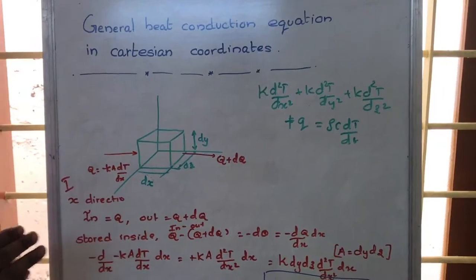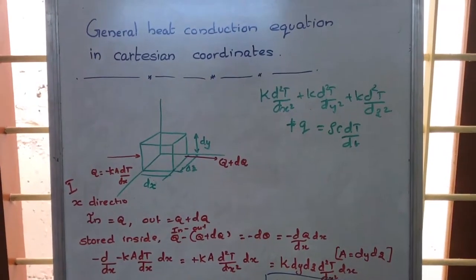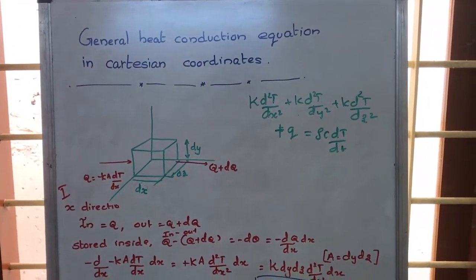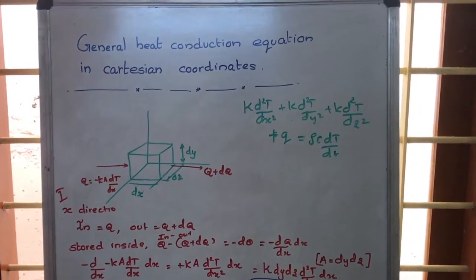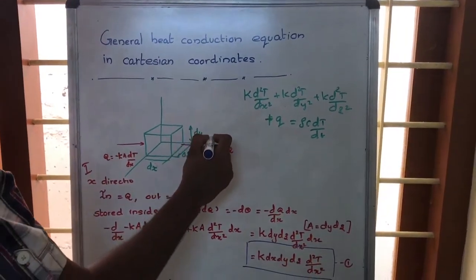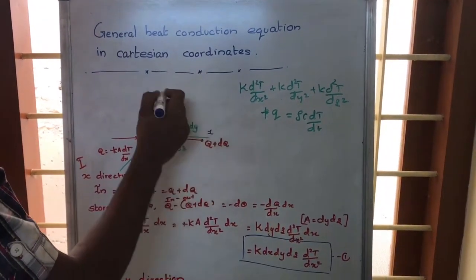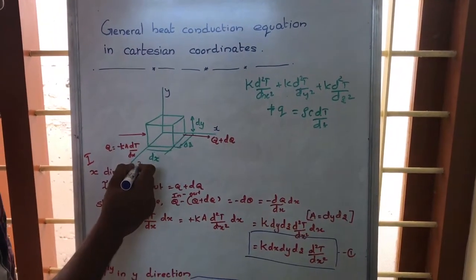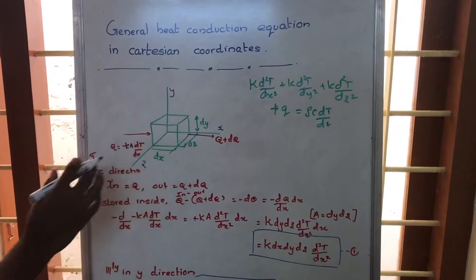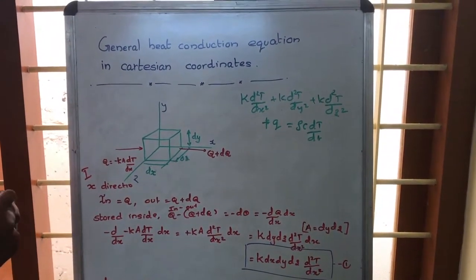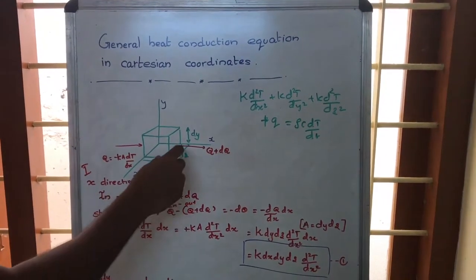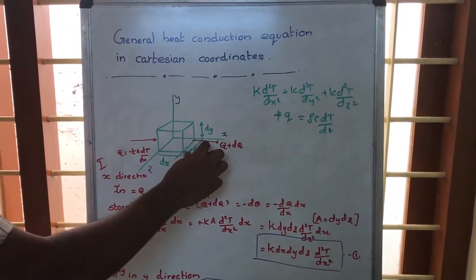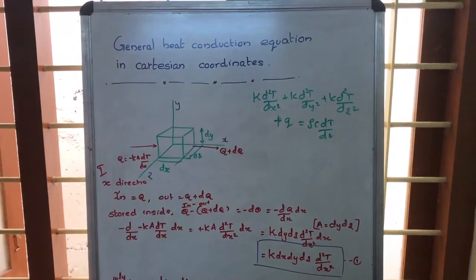General heat conduction equation in Cartesian coordinates. We will be having three axes: x-axis, y-axis, and z-axis, in which we are considering a rectangular element of length dx, breadth dz, and height dy.